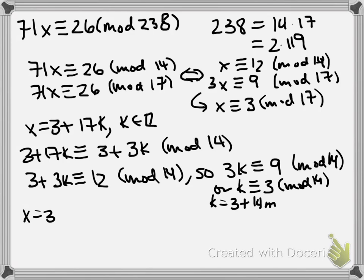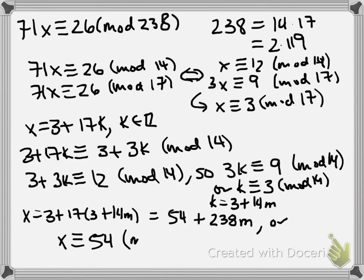k equals then 3 plus 14m for m an integer. So now let's substitute that back in. x was 3 plus 17k, but k was 3 plus 14m. So multiplying that out, we get x is 54 plus 238m, or x is congruent to 54 mod 238.